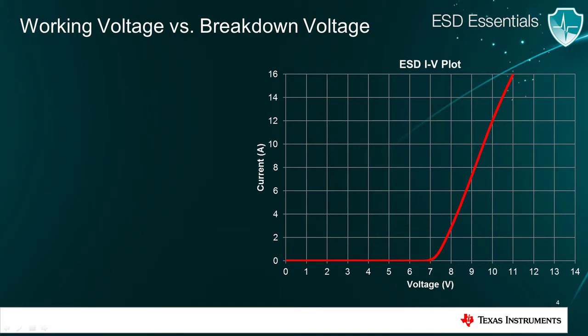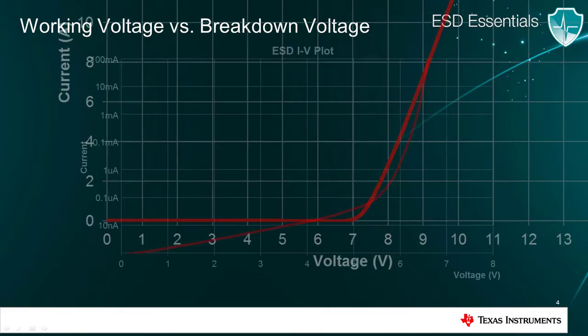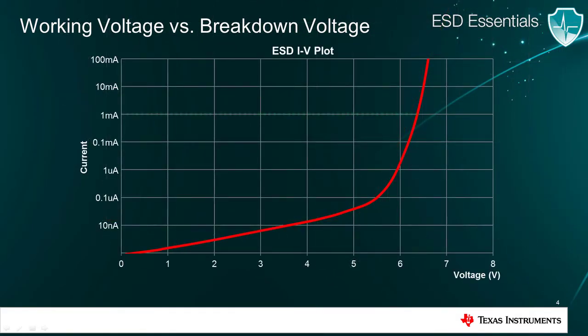Let's take a closer look at this current voltage curve on a logarithmic plot. As the input voltage approaches the diode's breakdown voltage, defined by the 1 milliamp current level in the plot, the diode will begin to conduct a significant level of current. This current will continue to increase with voltage. Ideally, the diode current should be zero for any voltage less than the breakdown voltage. However, in the real world, there will always be some leakage current, as you can see from the plot.